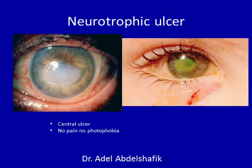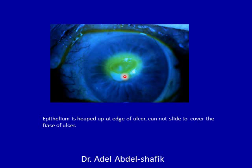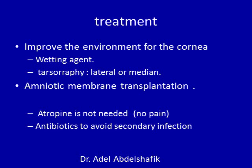There is no pain, no photophobia, and the eye looks quiet because there is no sensation. When we examine such an ulcer, we notice that the epithelium is heaped up at the edge of the ulcer, because cells cannot slide to cover the bed of the ulcer as the basement membrane of the epithelium is not there. To treat such a condition, we improve the environment by adding wetting agents. We can do tarsorrhaphy to minimize the size of the palpebral fissure to protect the cornea from wind and dust. We can also help by using amniotic membrane. Atropine is not essential as there is no pain; we just give antibiotics to avoid secondary infection.